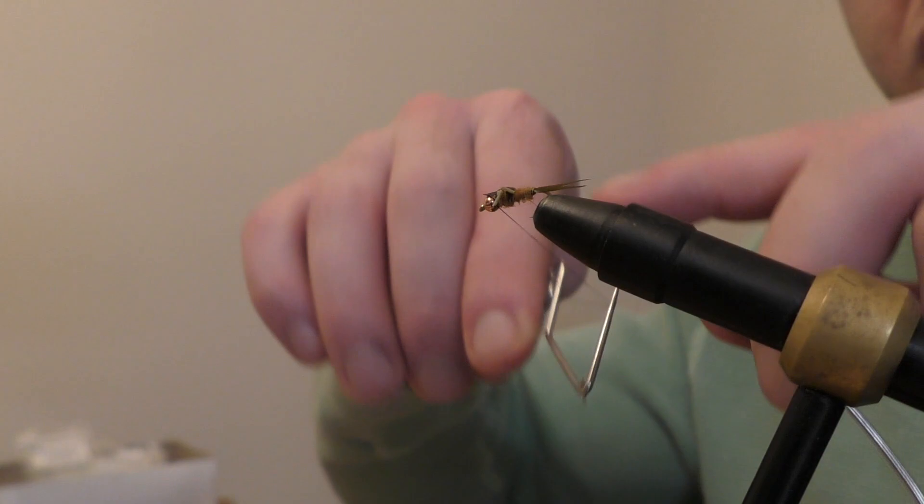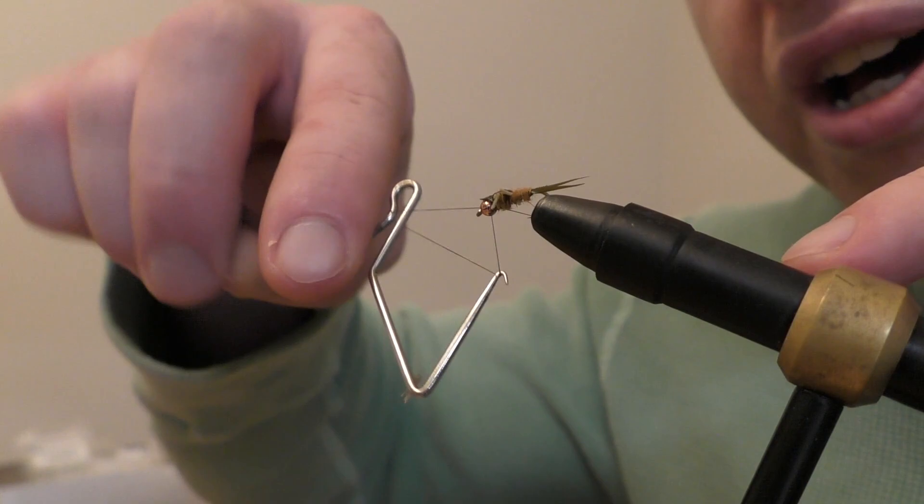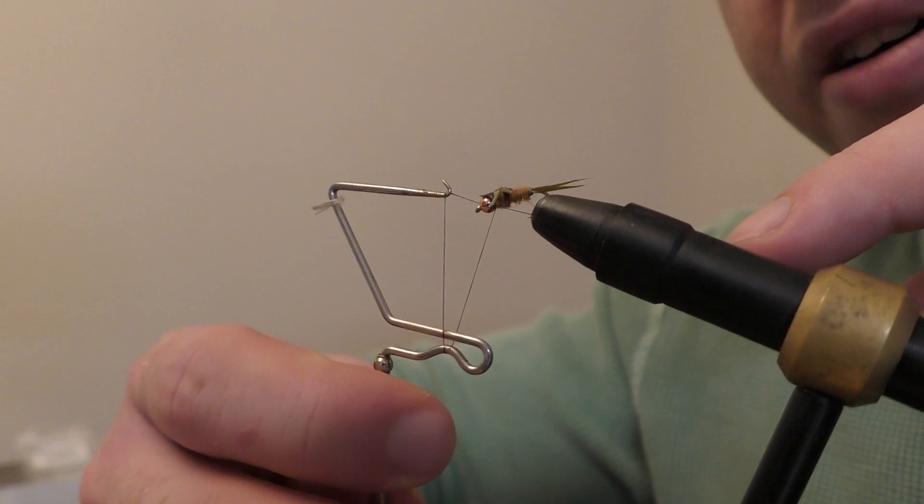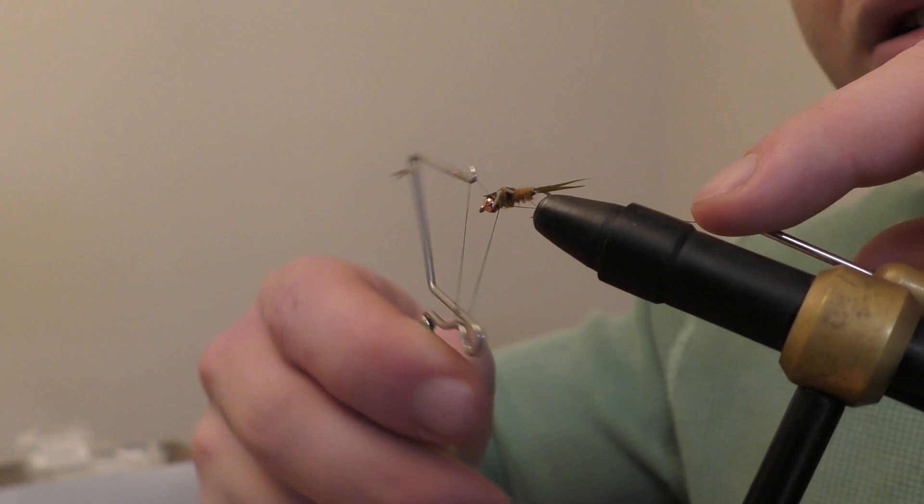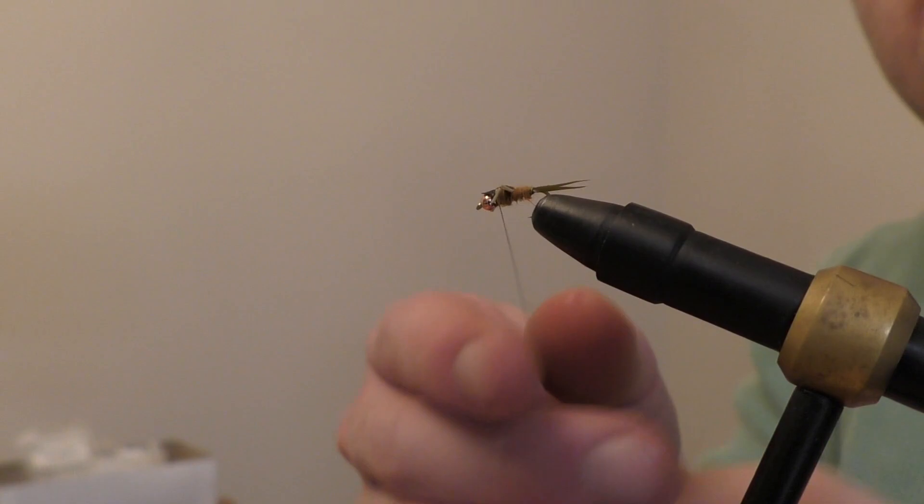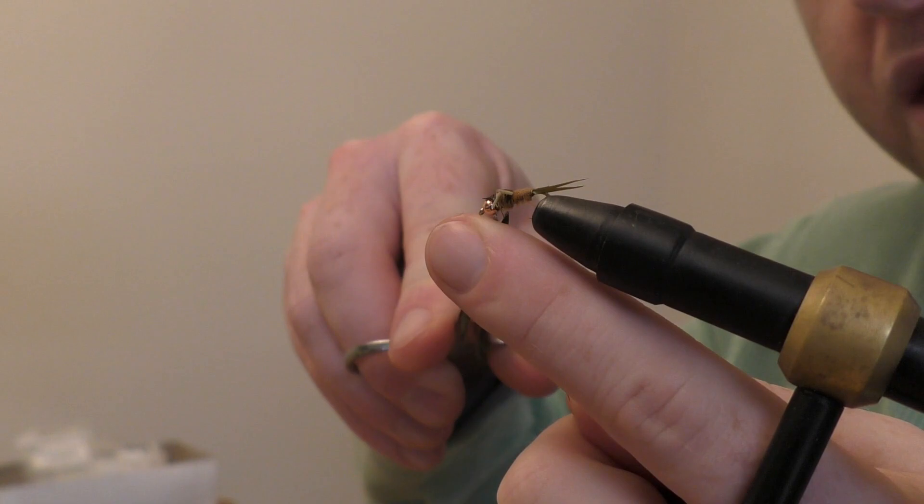Grab your whip finish tool of course. Make sure you're sneaking in behind the legs—you might have to kind of snake it around each leg. Give it a nice four turn whip finish and really seat the thread on that. You can go ahead and clip that off.